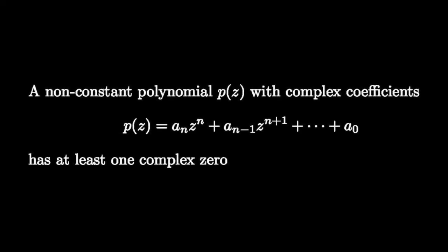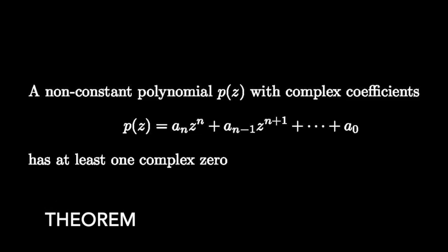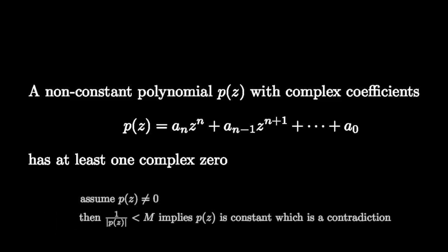We can now prove the following theorem: a non-constant polynomial p with complex coefficients has at least one complex zero. We can prove this by contradiction. Assume p never equals zero. Then 1 over p would be a bounded complex analytic function in the entire complex plane, which by Liouville's theorem implies 1 over p is constant, contradicting the assumption that p is non-constant.